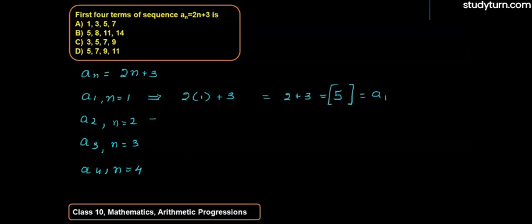Now, let us see second term. Second term will be, let us put here n equals to 2 and it will be 4 plus 3, that is 7. So second term here will be 7.